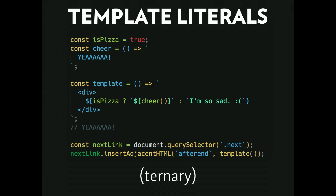You can even put logic in your template literals. For example, I have a ternary operator saying: is pizza true? Then run cheer(). If not, output the string 'I'm so sad.' Since pizza is true, I'll get 'yay.'